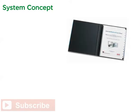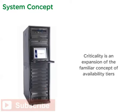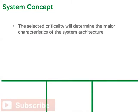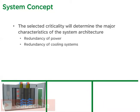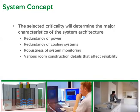The system specification and project manual that Crawford and Kelly had acquired provided them with the questions they needed to ask and the forms they needed to fill out. Their guidebook helped define the system concept for the rooms, establish a process for who does what, and allowed them to define the list of devices required. Criticality is an expansion of the familiar concept of availability tiers. The criticality selected will determine the major characteristics of the system architecture, such as redundancy of power and cooling systems, as well as the robustness of system monitoring and various room construction details that affect reliability.